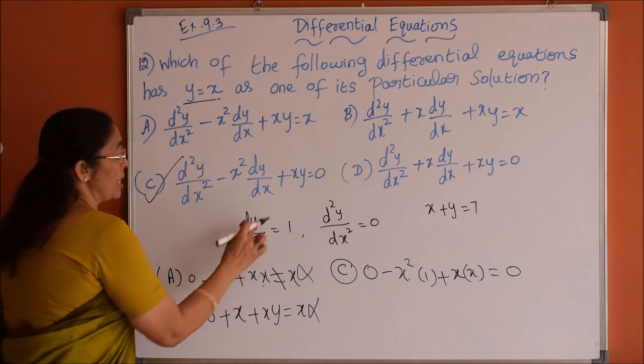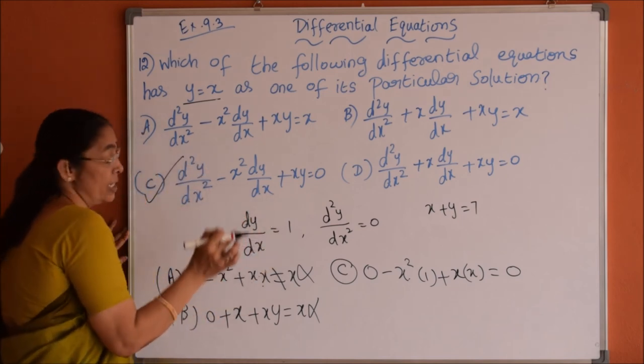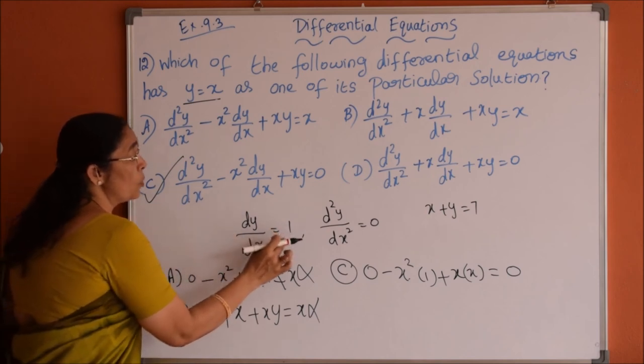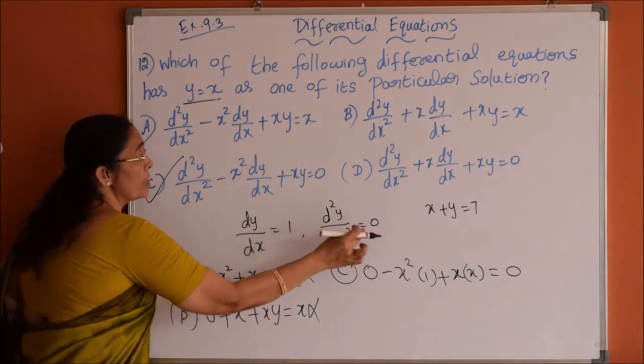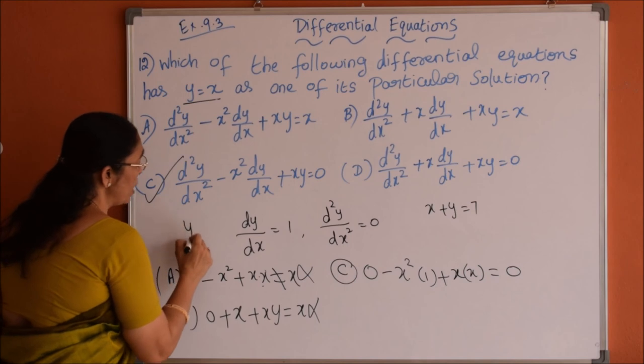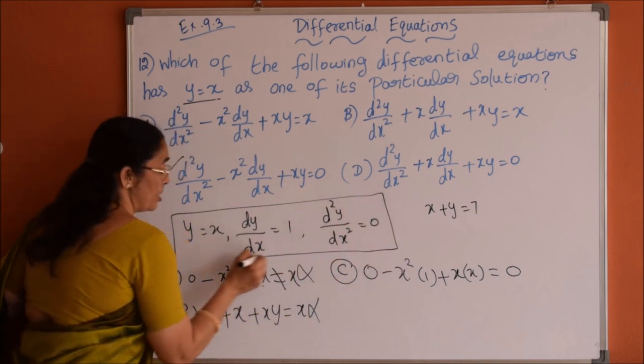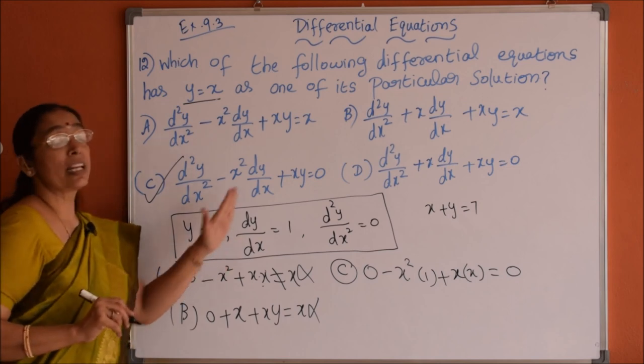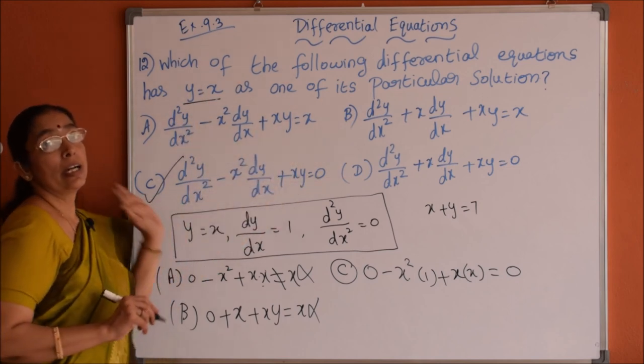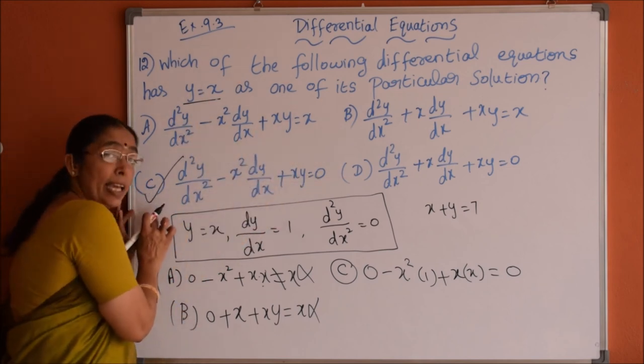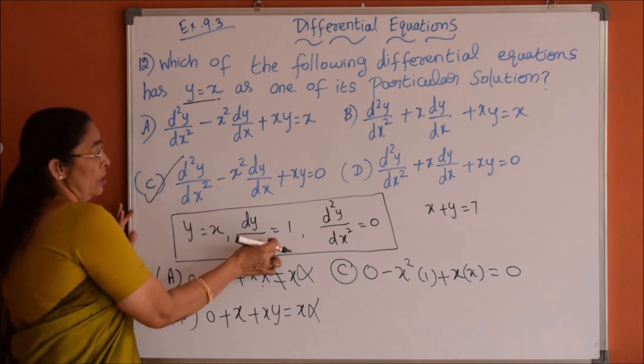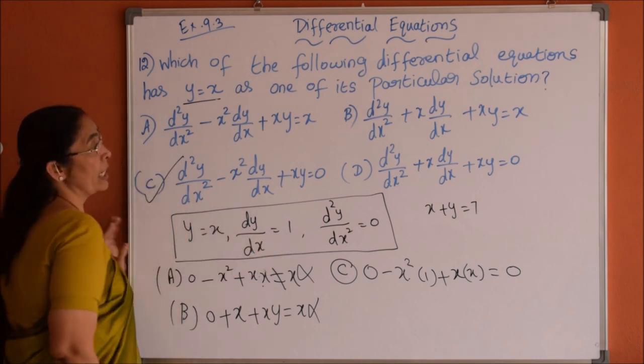So three values we used here: dy by dx equals 1, d square y by dx square equals 0, and y equals x. With the help of these three informations, we substituted these three values in the given options and we came to the conclusion option C is satisfying the condition. So option C is the correct answer.